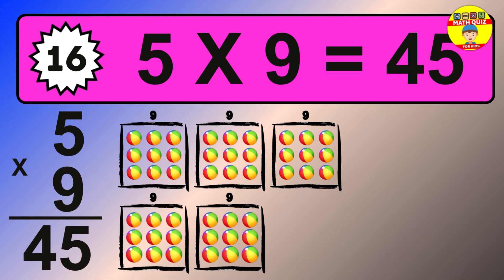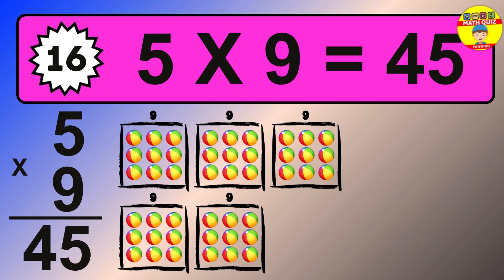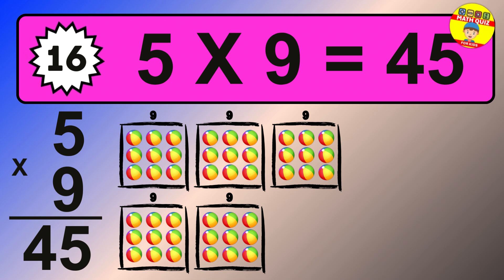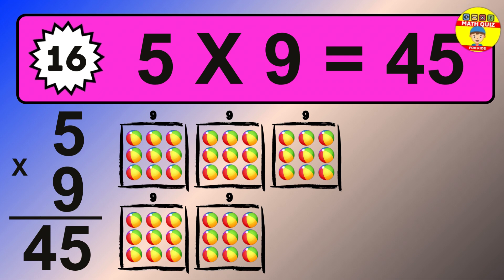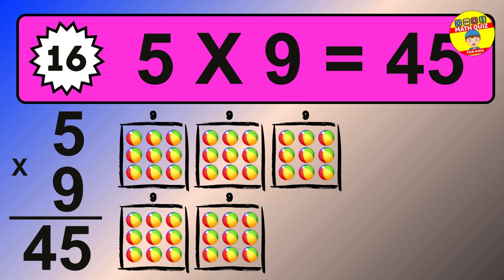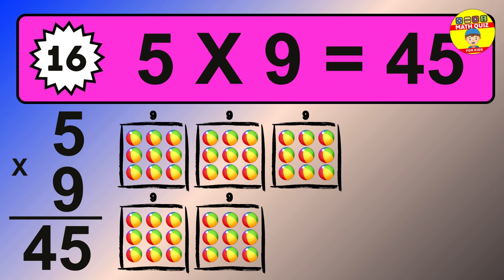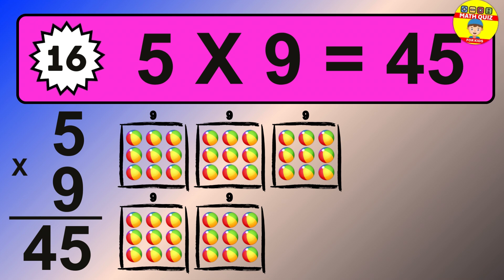Question 16. 5 times 9 equals what? The answer is 5 times 9 is 45. To calculate, we have 5 groups with 9 balls each one. So how many balls do we have? 45 balls.